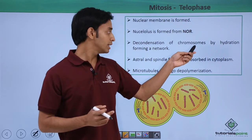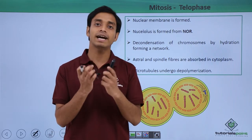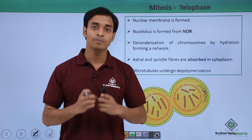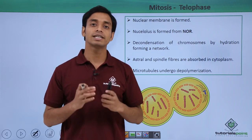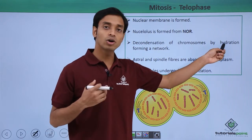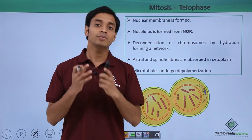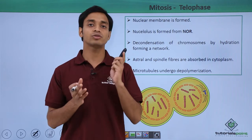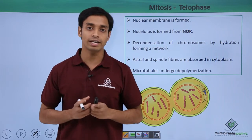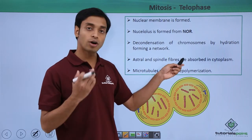The decondensation of the chromosomes also begins — the chromosomes which were specifically condensed into thick, chromosome-like structures now start decondensing. This happens because they undergo hydration, meaning water is added, and they revert to the same chromatin network-like structure as before.